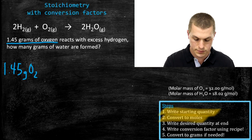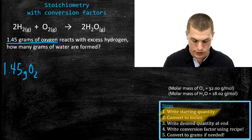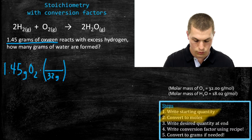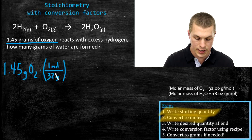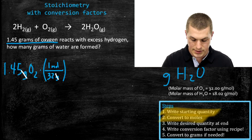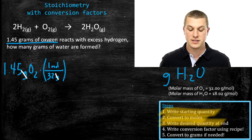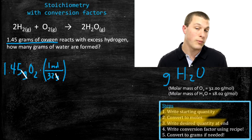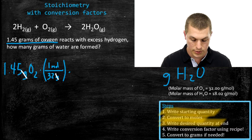Oxygen has a molar mass of 32 grams per mole, so we convert by writing 32 grams on the bottom and 1 mole on top. That gets us to moles of oxygen. We know we eventually want grams of H₂O, so we write that as our desired quantity. Before we can get to grams of water, we need to get to moles of water using our stoichiometry conversion factor.